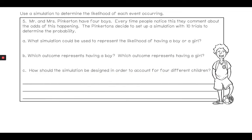Use a simulation to determine the likelihood of each event occurring. Mr. and Mrs. Pinkerton have four boys. Every time people notice this they comment about the odds of this happening. The Pinkertons decide to set up a simulation with 10 trials to determine the probability. What simulation could be used to represent the likelihood of having a boy or girl? There's a lot of different ones we could use, but in this case, tossing a coin—you have either heads or tails, boys or girls—and then we could see the likelihood of this happening.